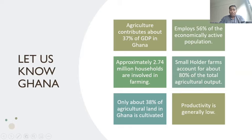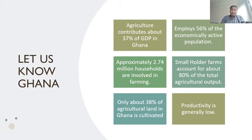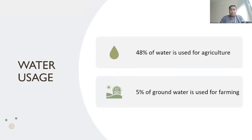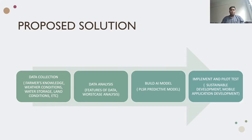Agriculture contributes 37% of Ghana's GDP and employs 56% of the economic population. About 80% of smallholders are involved in agricultural production, 38% of agricultural land is cultivated, involving 2.74 million households. However, productivity is generally low and water consumption is not well managed. 48% of water is used for agriculture, of which 5% is groundwater.